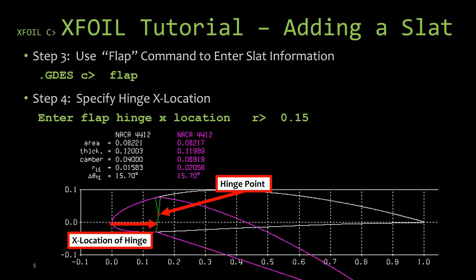The next step would be to use the flap command to enter in the slat information. The first piece of information that we need to enter is the x location of the hinge point. Remember, this is the distance from the zero axis to the hinge point.